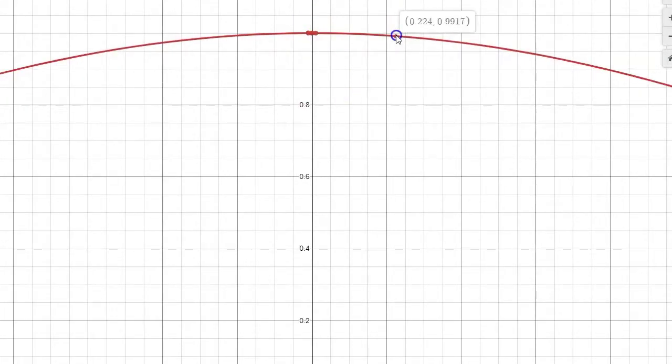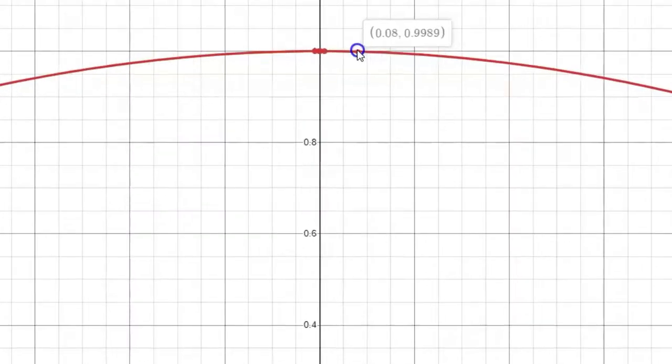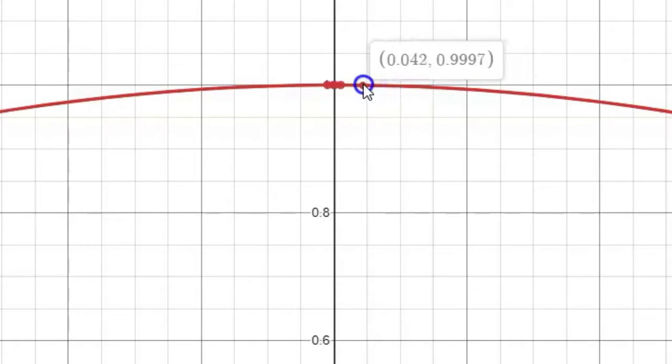So I can trace on this or drag the points on this and see for input quantities on the positive side of zero that are close to zero. Look at that output quantity, 0.999999. Yes, it appears as though as the input gets closer to zero, the output gets closer and closer to one. Now, of course, right at zero, we get the undefined phenomenon.